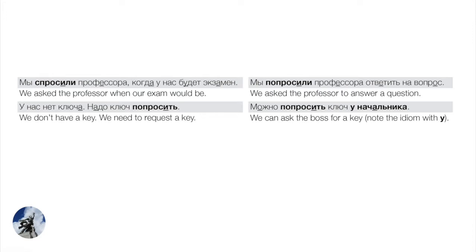У нас нет ключа, надо ключ попросить — we don't have a key, we need to request a key. Note that has nothing to do with a question; we're trying to get a key. Можно попросить ключ у начальника? — We can request a key from the boss. That's a peculiar idiom — 'at the boss' — for who you're asking something from.